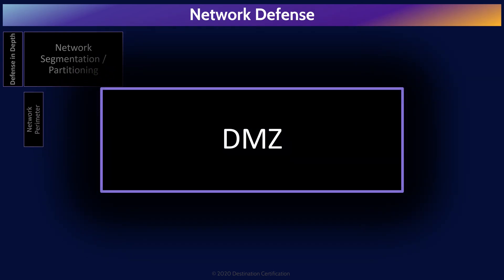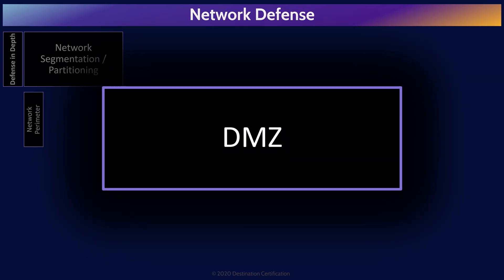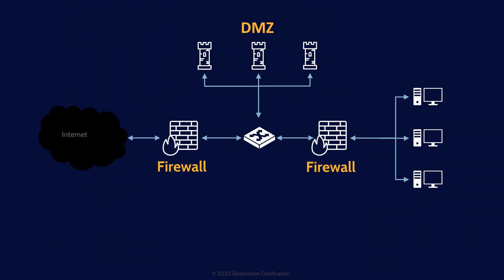DMZ stands for Demilitarized Zone. DMZs are a network segment where we place our bastion hosts — our systems that are intentionally accessible by the public over the internet, like web servers, mail servers, and FTP servers. We fully expect these publicly facing systems will be attacked, and if they are compromised within a DMZ, the attacker does not have a foothold within our internal network. We severely restrict any traffic that can come from the DMZ into the internal network.